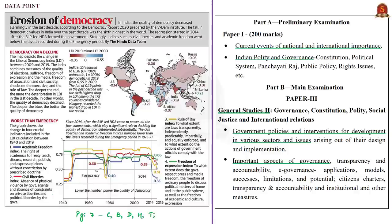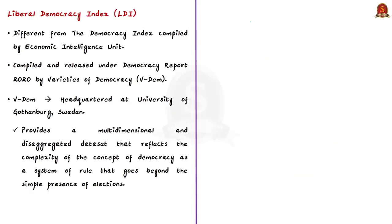This is an interesting discussion based on a data point which reflects the fall in democracy in India and in the world. Let us try to see the important takeaways from the statistics given in this data point. The syllabus relevant to this discussion is given here for your reference. Note that the data point is with reference to the Liberal Democracy Index — do not confuse this with the Democracy Index compiled by the Economic Intelligence Unit, which is a UK-based company.